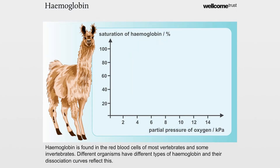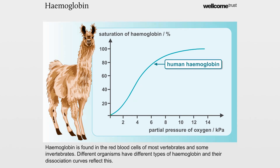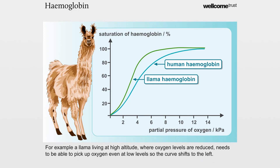Fetal haemoglobin is found in the red blood cells of most vertebrates and some invertebrates. Different organisms have different types of haemoglobin, and their dissociation curves reflect this. For example, a llama living at high altitude, where oxygen levels are reduced, needs to be able to pick up oxygen even at low levels, so the curve shifts to the left.